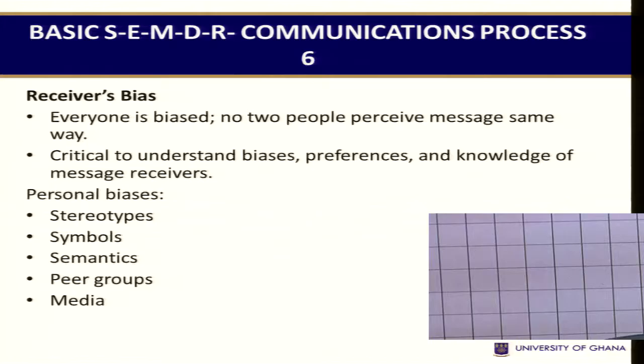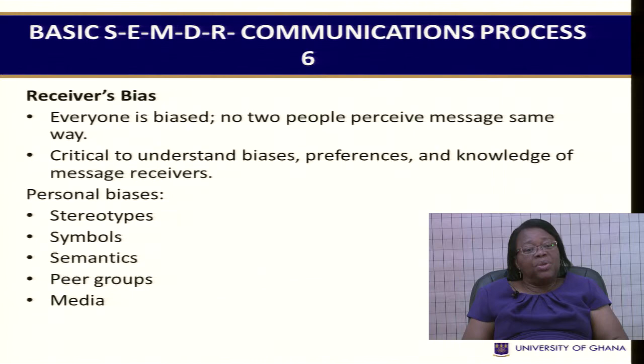For example, with stereotypes, the person you are talking to may already have an impression about certain people. If they think a certain category of people are very intelligent, then whatever message comes from those people — whether true or false — they may accept as wholly true. Conversely, if they have a negative view of another group, they will believe that group's message can never be true. Similarly, symbols can be interpreted as insults, praise, or negative messages depending on the receiver. A receiver who decodes information based on these personal biases may arrive at a very different interpretation of your message.